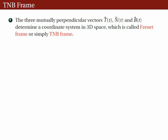This is the third video out of three on the topic: Moving Trihedra of Space Curves. The three mutually perpendicular vectors — unit tangent, unit normal, and unit binormal vectors — determine a coordinate system in 3D space, which is called the Frenet frame, or simply the TNB frame.